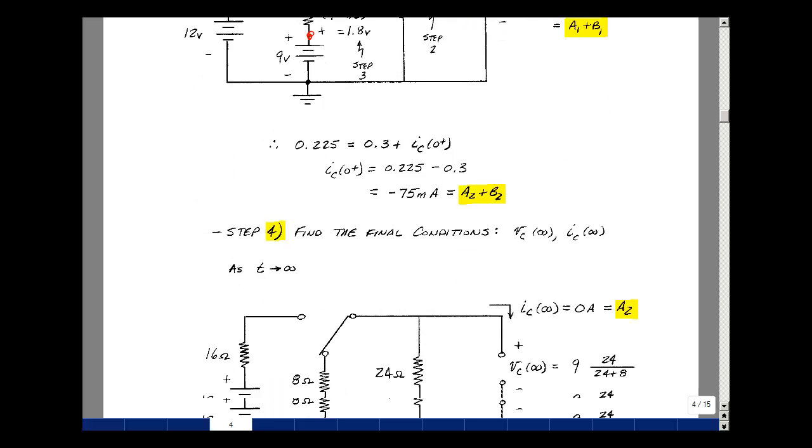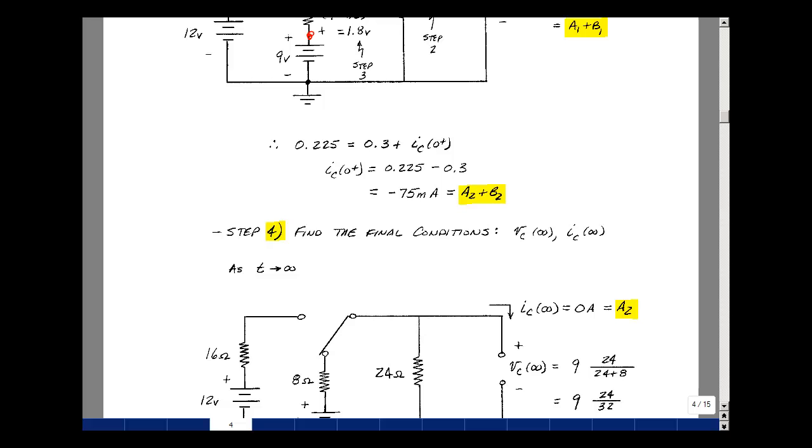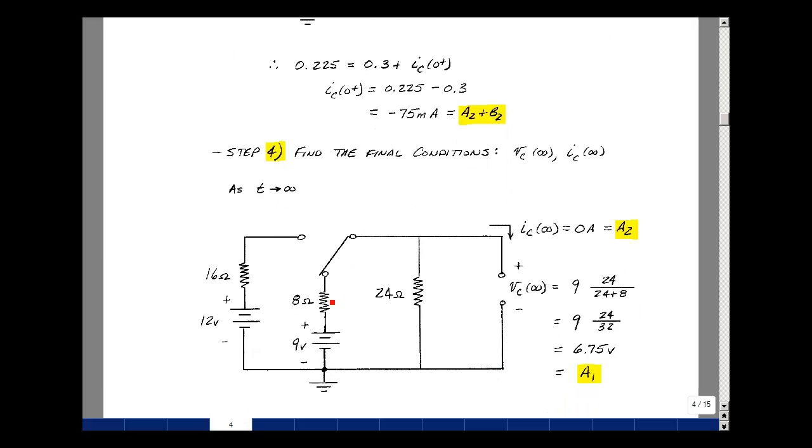Take a look then as t approaches infinity, or really five time constants. Switch is still in this position. Changed state at t equals zero, and now our capacitor's again reached steady state, so it's an open circuit.